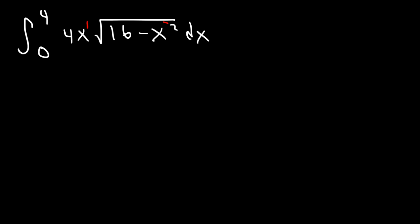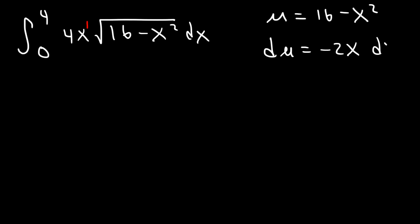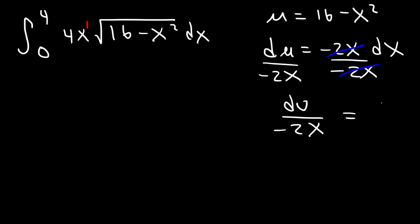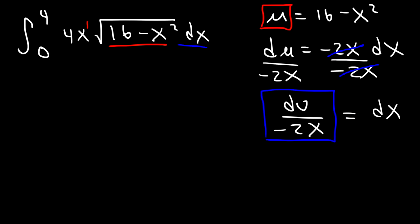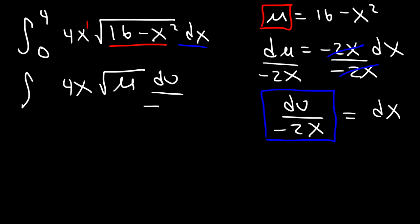We're going to set u equal to 16 minus x squared, because x squared is the higher-degree term. If u equals 16 minus x squared, then du equals negative 2x dx, since the derivative of 16 is 0 and the derivative of negative x squared is negative 2x. Dividing by negative 2x gives dx equal to du over negative 2x. We replace 16 minus x squared with u and dx with du over negative 2x, giving us 4x times the square root of u, times du over negative 2x.